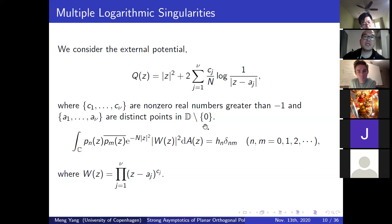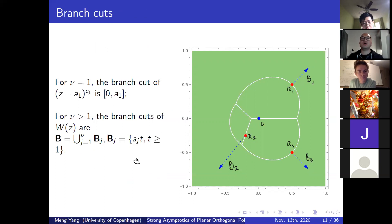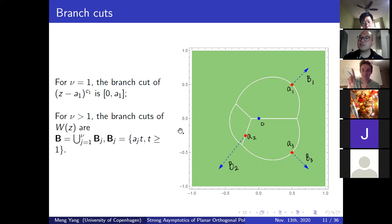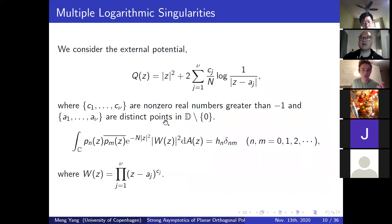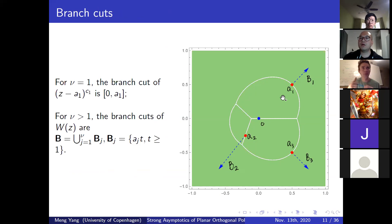For N equal to one, we choose the branch cut of (z - A_1)^{C_1} to be the segment from 0 to A_1. For N greater than one, we choose the branch cuts as the union of rays. For example, for N equal to three with points A_1, A_2, A_3, and zero in the middle, the rays go from zero through each A_j to infinity, giving branch cuts B_1, B_2, B_3. An audience member asks what happens if two A_j's have the same argument; the speaker responds that we choose slightly different arguments so the branch cuts cannot overlap.